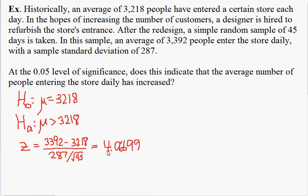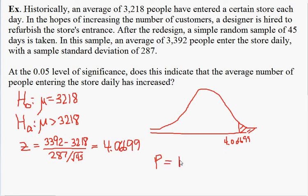So we have the bell curve, and 4.06699. And the area to the right will be the p-value, the probability of something this extreme or even more extreme.